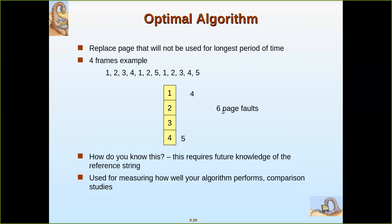Let us take an example. Let us have four frames. This is the reference string. The first reference will lead to a page fault, as the page may not be in main memory. So references to pages 1, 2, 3, and 4 will each cause a page fault and they will be read from secondary disk into main memory. There will be 4 page faults for the first reference of these 4 pages. Then again it comes to 1 — since it is already in main memory, no page fault. Then 2 — already in memory, no page fault. Then comes 5, and now we have to replace one of the pages to make room for page 5.